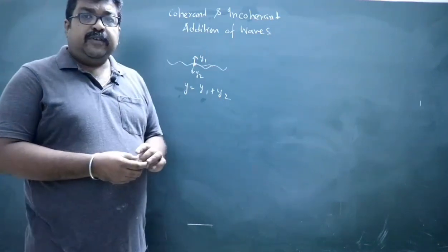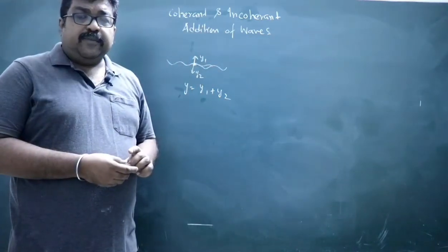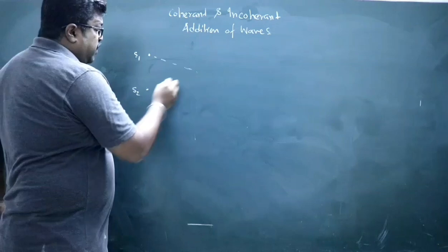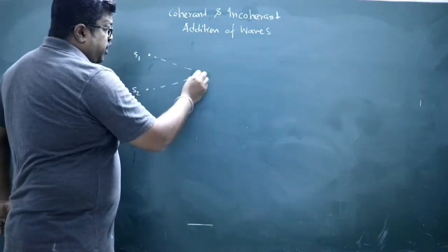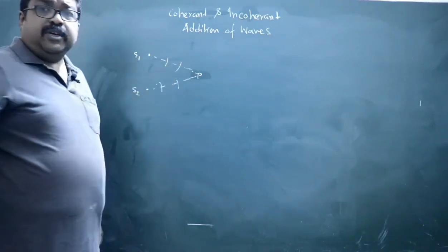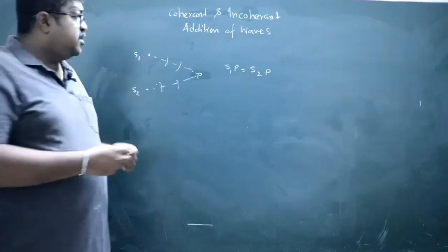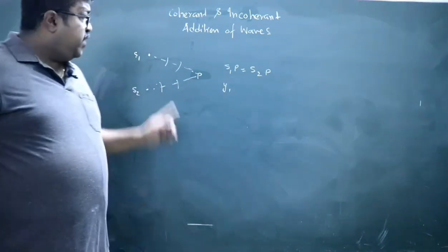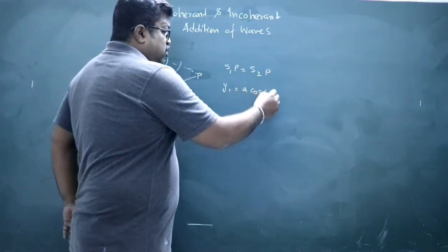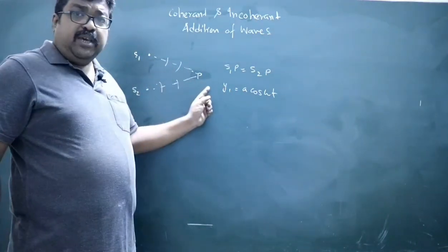Now let us see how this principle of superposition of waves leads to addition of waves when waves are coherent and incoherent. Consider two sources S1 and S2. Waves from these two sources are reaching point P, and let us say S1P is equal to S2P, so there is no path difference. The displacement equation of the wave emitted from S1 is y1 equal to A cos omega T.